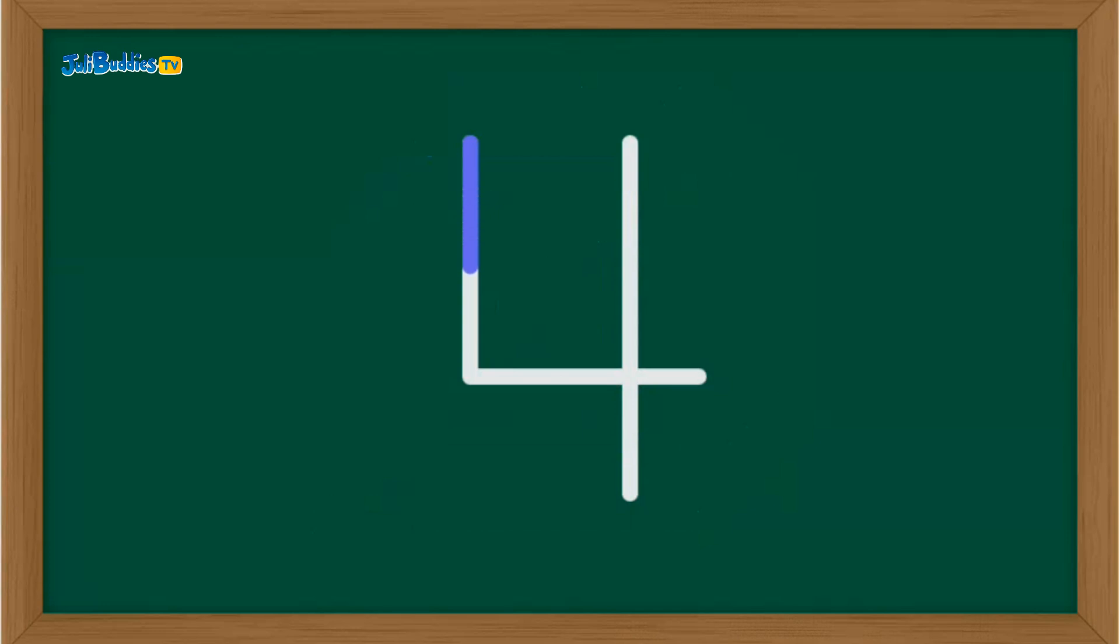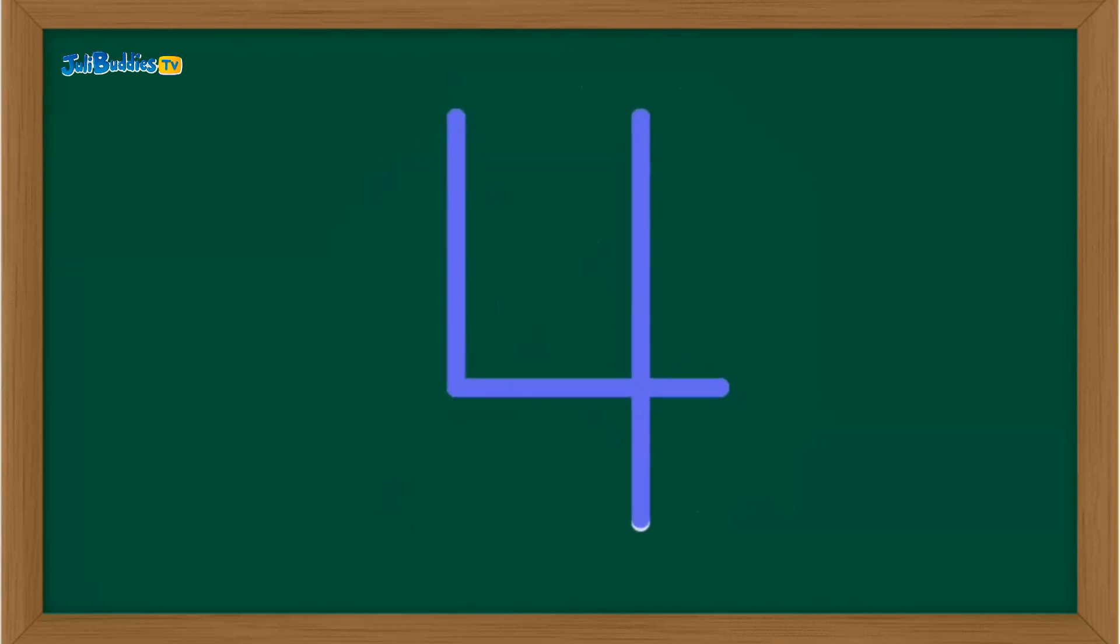Time for number four. Draw a straight line down, then a line across, and a long line down again. Excellent! That's number four.